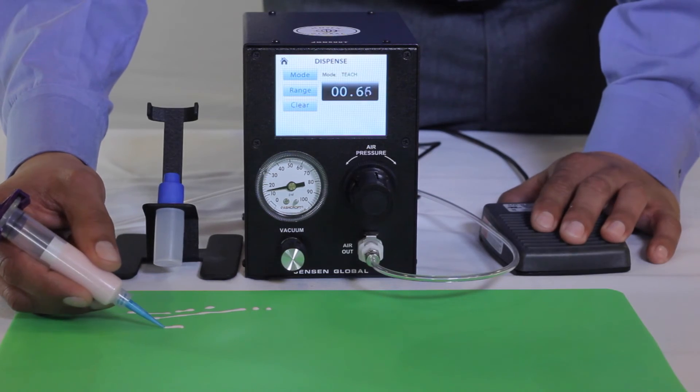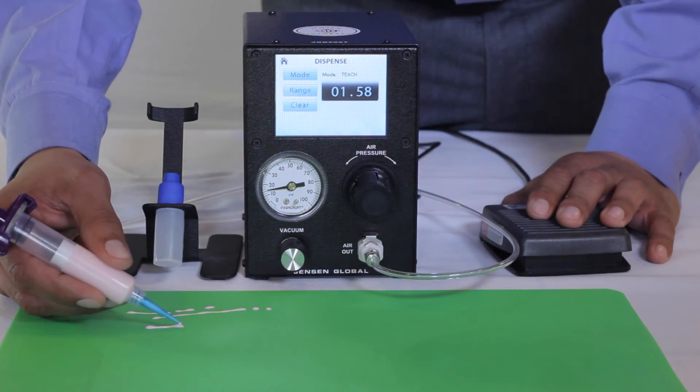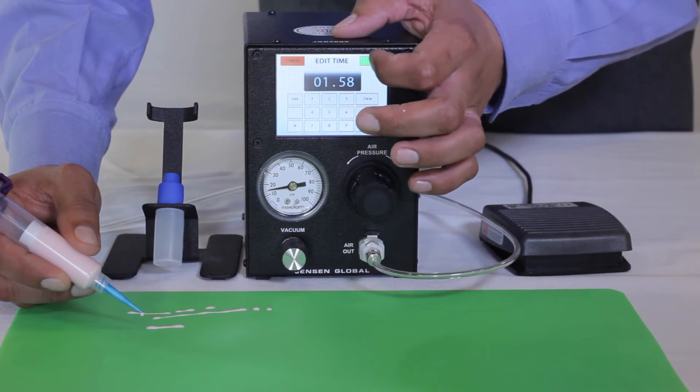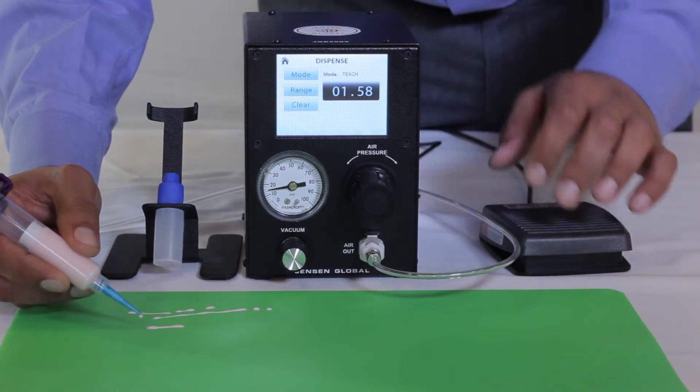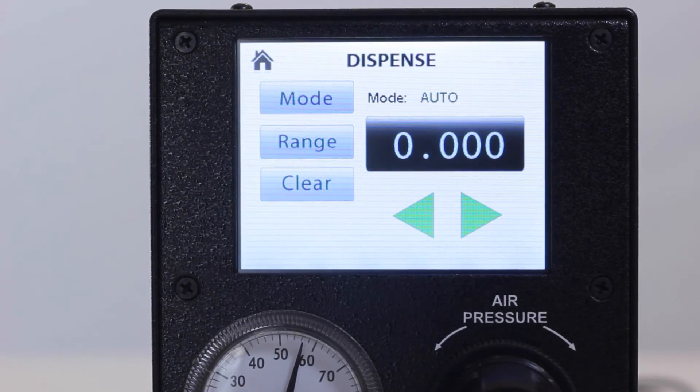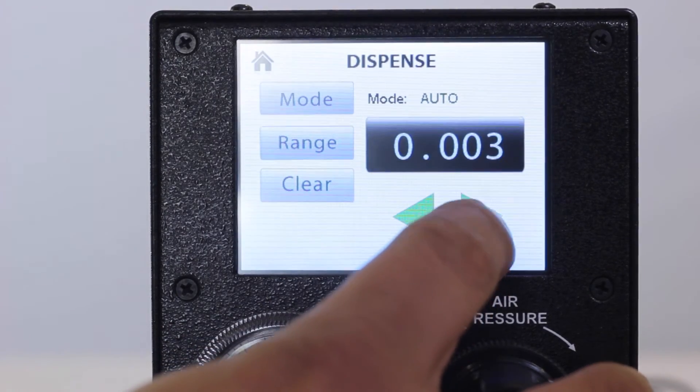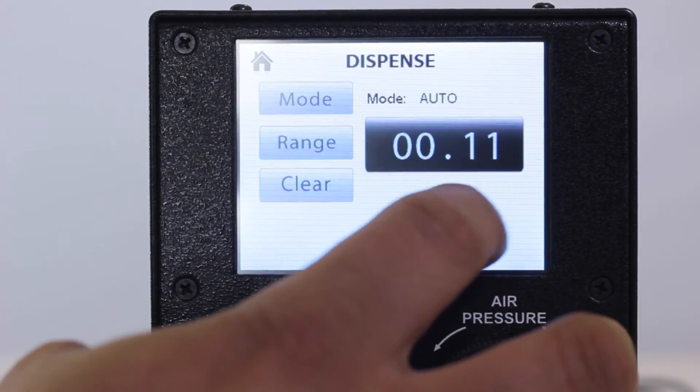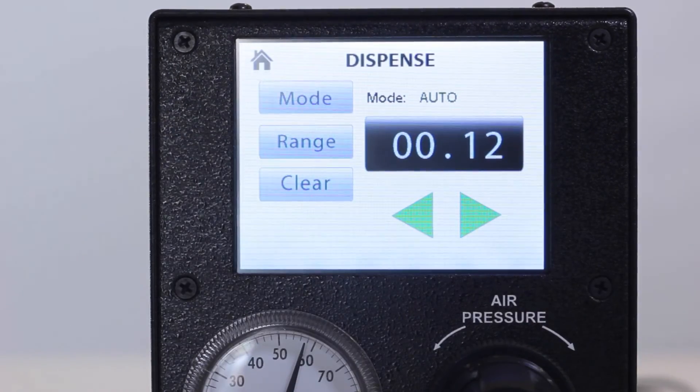Auto mode allows the user to set their specific timing range and to test out a potential profile to make sure the timing range is correct before programming the unit. To adjust the time, use the left and right green arrows and to change the decimal placement, press the Range button.